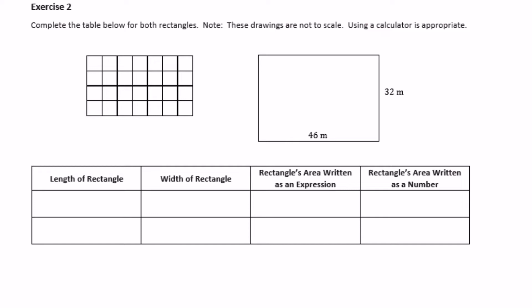Exercise 2: complete the table for both rectangles. Note: drawings are not to scale; using a calculator is okay. The first rectangle is 4 by 7 units. The length is 7 units and the width is 4 units — using 'units' because no unit was given. The area is 7 units times 4 units, which equals 28 units squared.